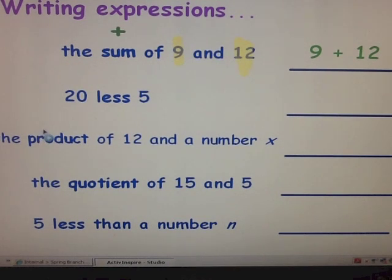The next example is 20 less 5. What is our clue word that tells us our operation? It is less. Less means to subtract. So we're going to subtract 5 from 20. Our expression would be 20 minus 5.